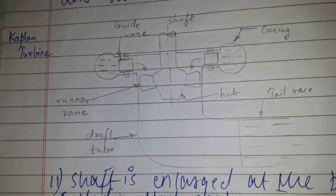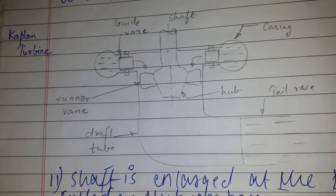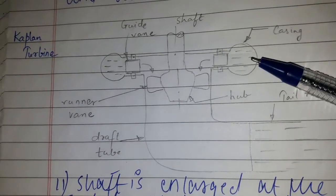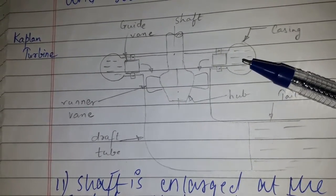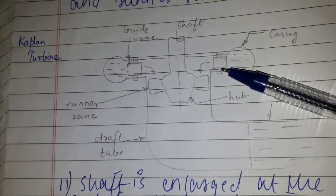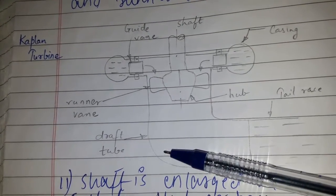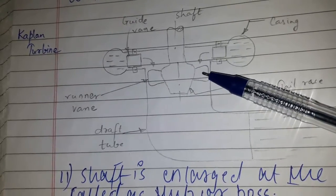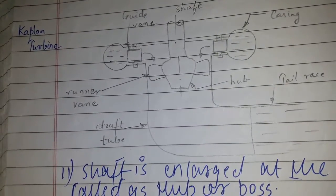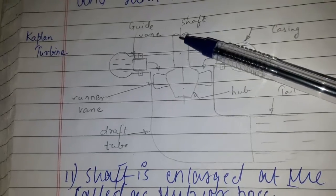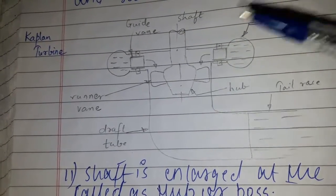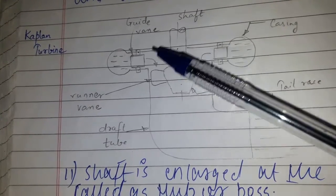Today's topic of discussion is Kaplan turbine. Regarding the construction, it consists of casing, guide vane, draft tube, shaft, hub, and runner vane. The shaft is enlarged at the bottom and is called the hub or boss.